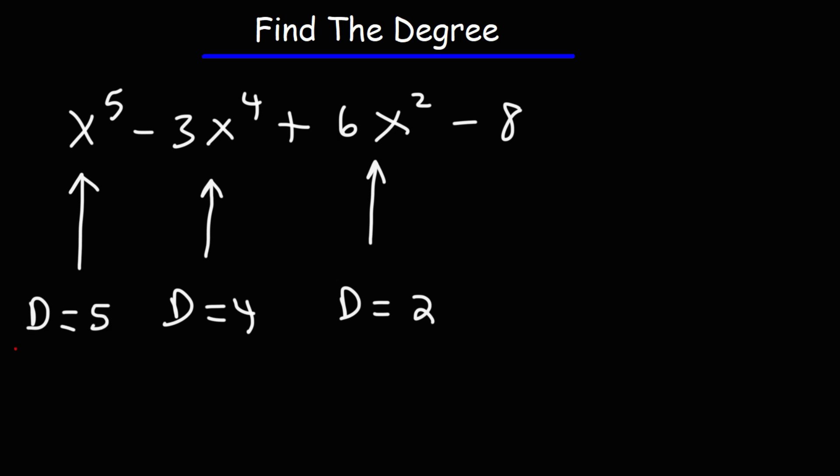The leading term has a degree of 5, so the highest degree is 5 — that is our answer. So that's how you find the degree of a polynomial: find the monomial with the highest degree, and that's going to be your answer.